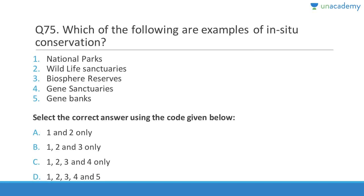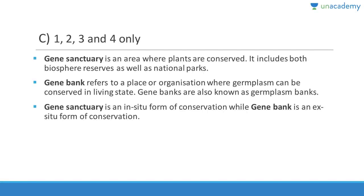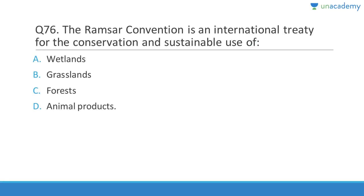Question 75: Which of the following are examples of in-situ conservation? Wildlife sanctuaries, national parks, biosphere reserves, sacred groves, and gene sanctuaries are all examples of in-situ conservation. Answer is C, 1, 2, 3, and 4. A gene sanctuary is an area where plants are conserved — it includes biosphere reserves and national parks. A gene bank is totally different — it is a biological laboratory.